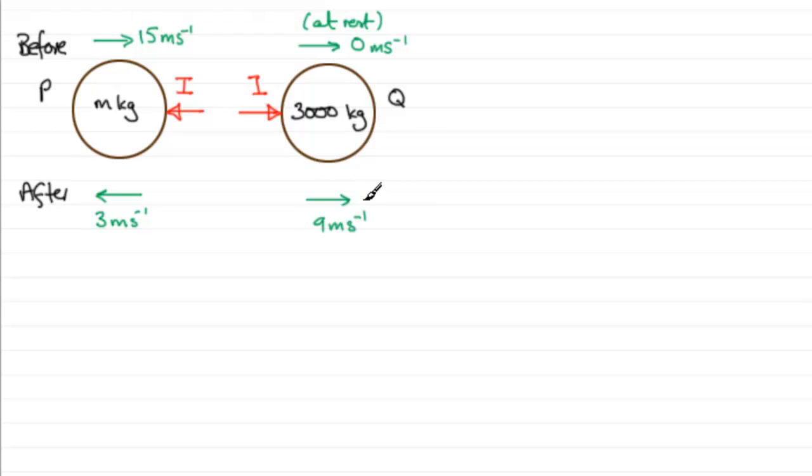Because if you're asked to work out impulse, you should know that impulse equals the change in momentum. Let's just write that in: change in momentum. And we need to just write that out as a formula.